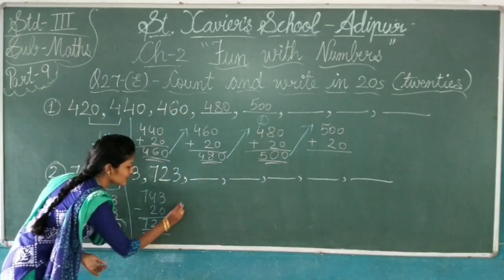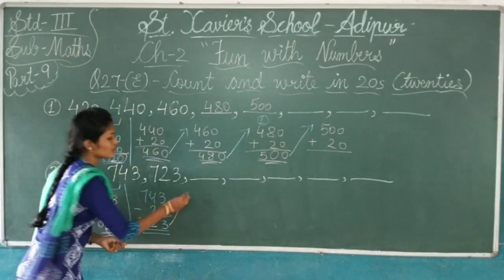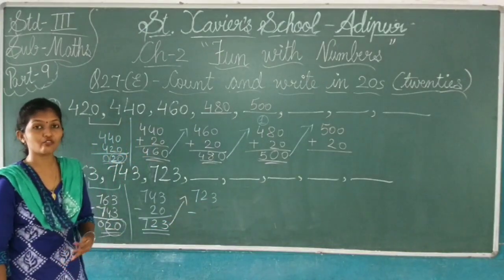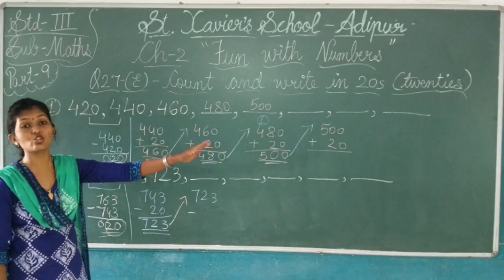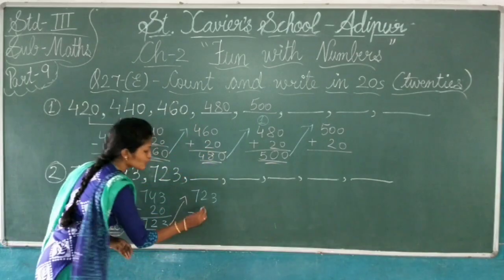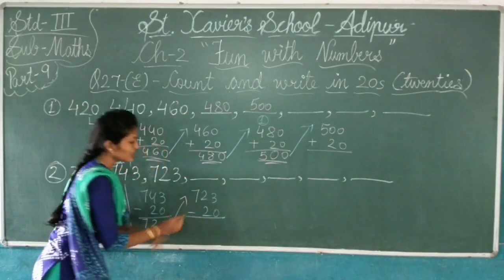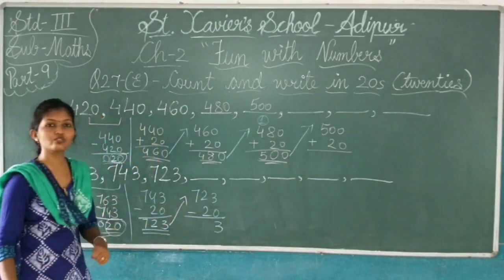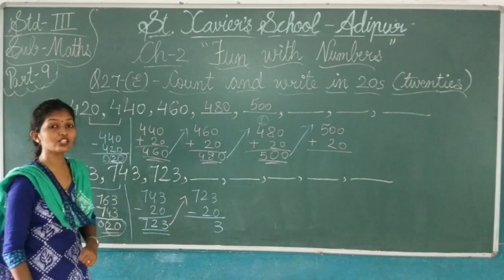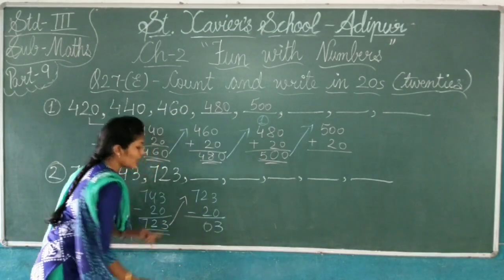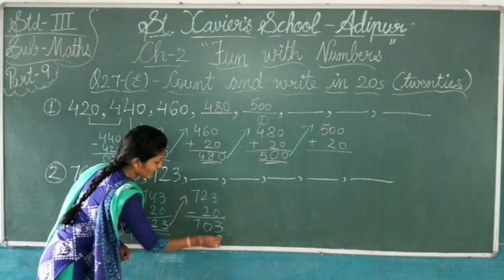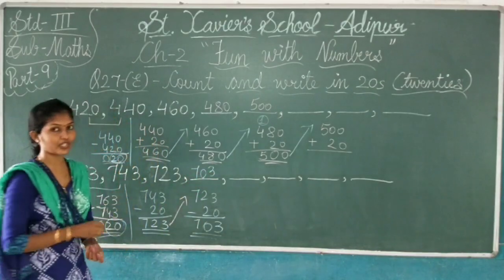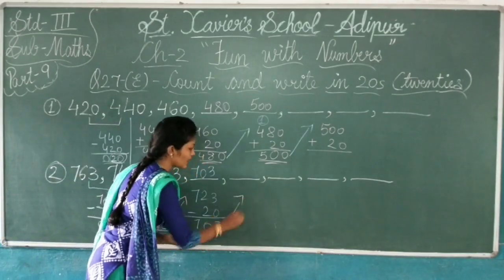Now what I will do, I will take this 723 up. 723 minus 20, because we are counting in twenties. So 3 minus 0 is 3, 2 minus 2 is 0, and 7 is 7. And what is the answer? 703.